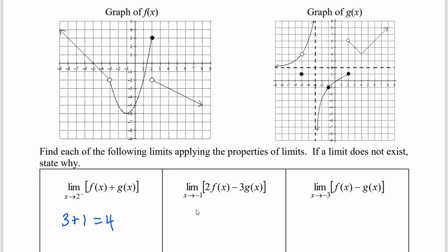Next, 2 times the limit as x approaches negative 1 of f of x, minus 3 times the limit as x approaches negative 1 of g of x. At negative 1, f of x has a limit of negative 6, and g of x has a limit of negative 1. So we get 2 times negative 6, which is negative 12, minus 3 times negative 1, which becomes plus 3. Negative 12 plus 3 gives us negative 9.